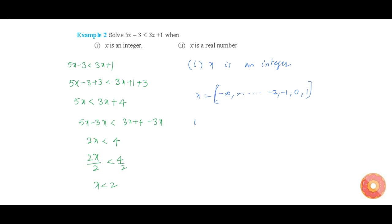Now in the real number case, x is a real number. If x is a real number then it can be directly written as x from minus infinity to 2.